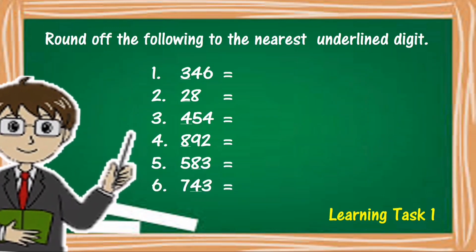Round off the following to the nearest underlined digit. Number 1: 346. Number 2: 28. Number 3: 454. Number 4: 892. Number 5: 583. Number 6: 743.